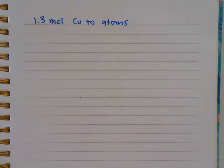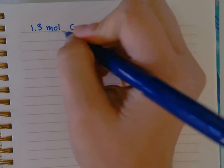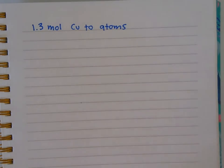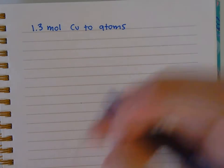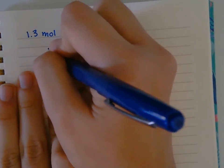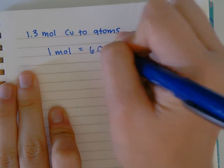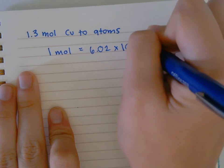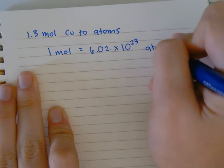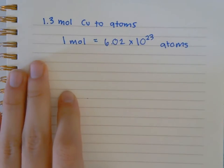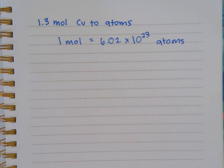This example is asking you to turn moles to atoms. I know from my conversions that one mole is equal to 6.02 times 10 to the 23rd atoms, or particles or molecules, or whatever it may be.